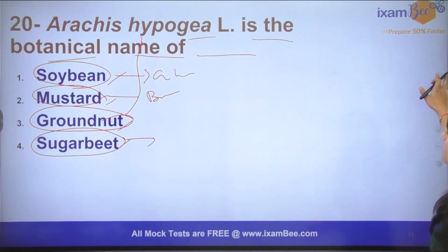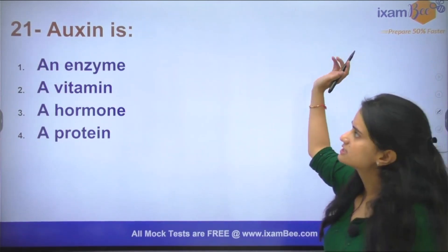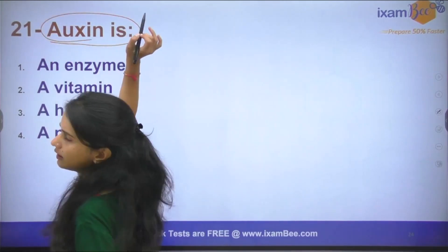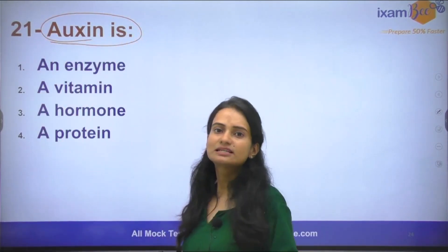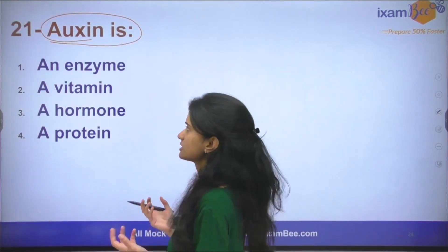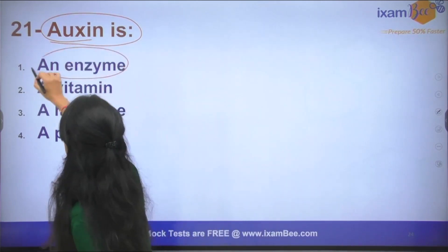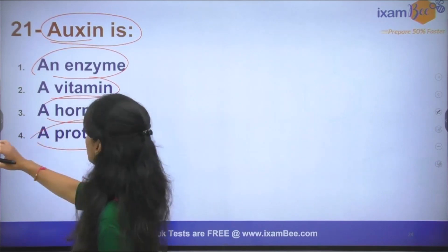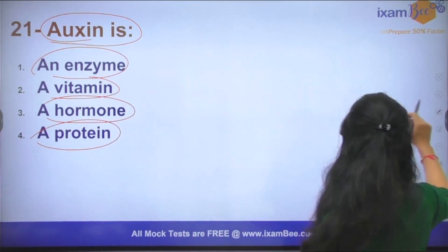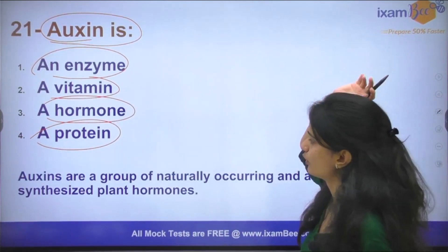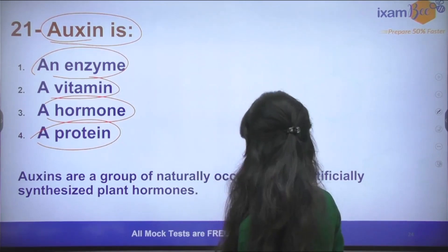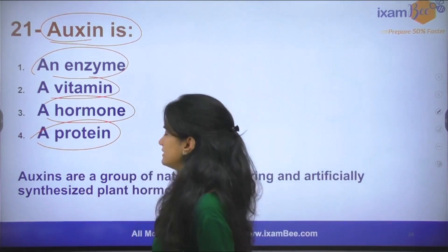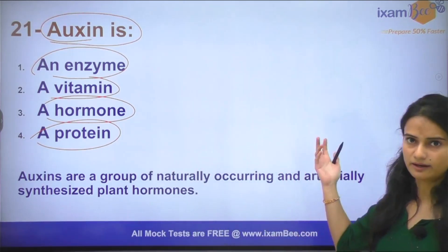The next question: Auxin is what kind of chemical found in plants? Is it an enzyme, a vitamin, a hormone, or a protein? Auxin is actually a plant hormone that is synthesized inside the plant.